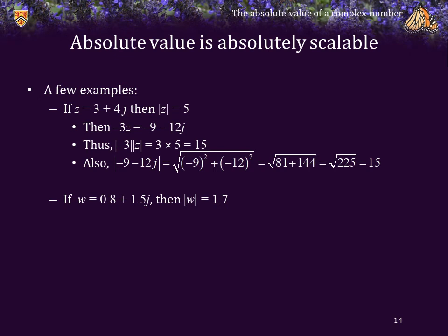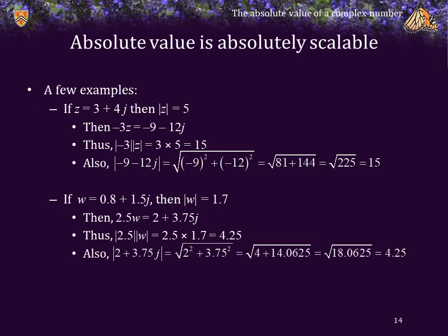If we define w to be 0.8 plus 1.5j, then the absolute value of w is equal to 1.7. 2.5w is therefore 2 plus 3.75j. 2.5 times the absolute value of w is 4.25, and if we calculate the absolute value of 2 plus 3.75j, we see with a little bit of arithmetic that this too is equal to 4.25.